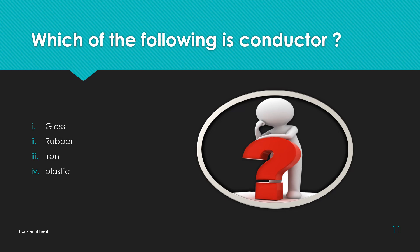Some questions for you. Which of the following is conductor? First option is glass, second one is rubber, third is iron, fourth one is plastic. So, let us know which of the following is conductor. The answer is iron. Iron is a metal which conducts heat. So, iron is a conductor.